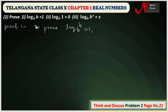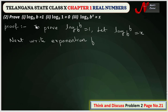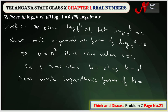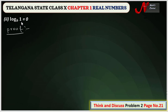Let log b base b equal x. Writing in exponential form: b equals b power x. This is true when x equals one, since b equals b power one. Writing back in logarithmic form: log b base b equals one. Hence proved that log b base b is equal to one.